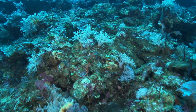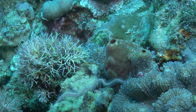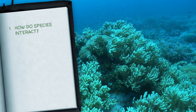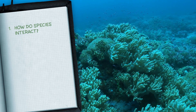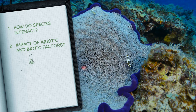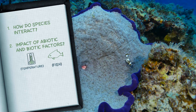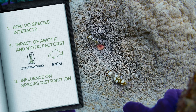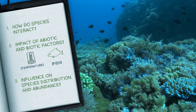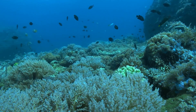In this video, we'll investigate the following key questions: How do species interact on a coral reef? What are the effects of abiotic and biotic factors? And how do these interactions influence patterns of distribution and abundance within the ecosystem as a whole?